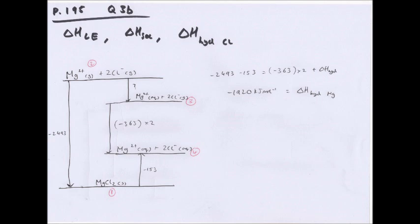We've been given the enthalpy change of solution as −153 kJ mol⁻¹. Steps 2 to 3 and 3 to 4 are clockwise; steps 2 to 1 and 1 to 4 are anticlockwise, so they equal each other. So: −2,493 − 153 = −363 × 2 + hydration of magnesium. Rearranging gives −1,920 kJ mol⁻¹ as the enthalpy change of hydration for magnesium.